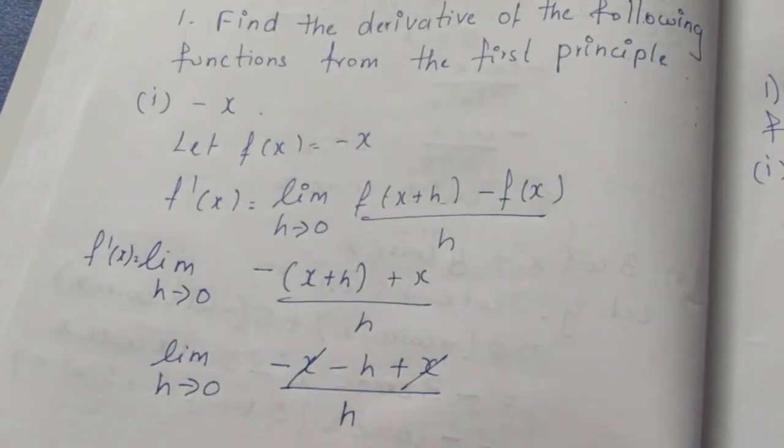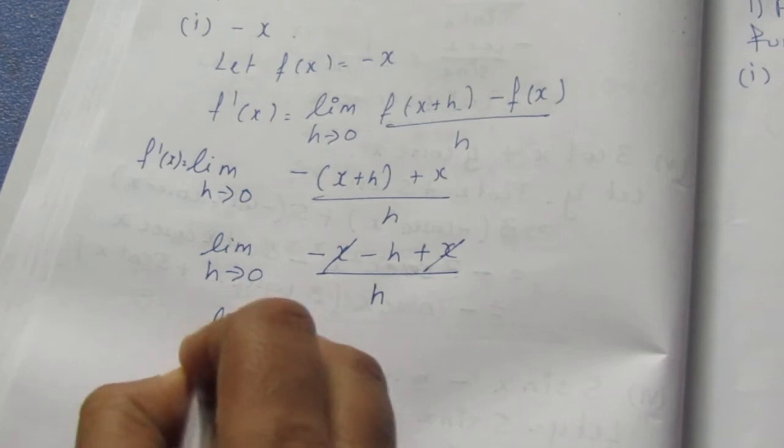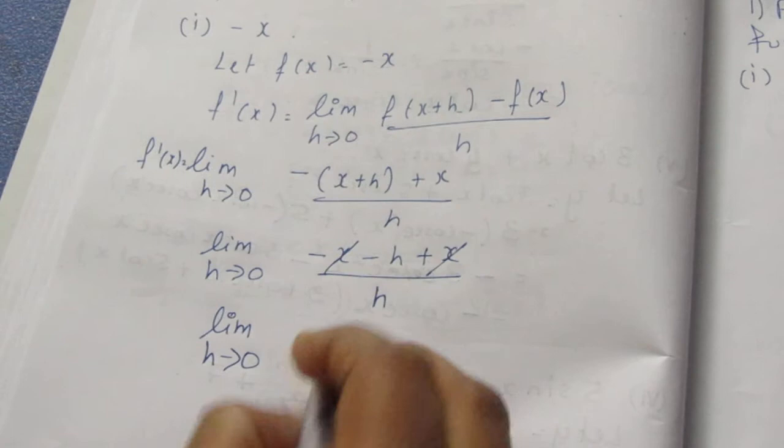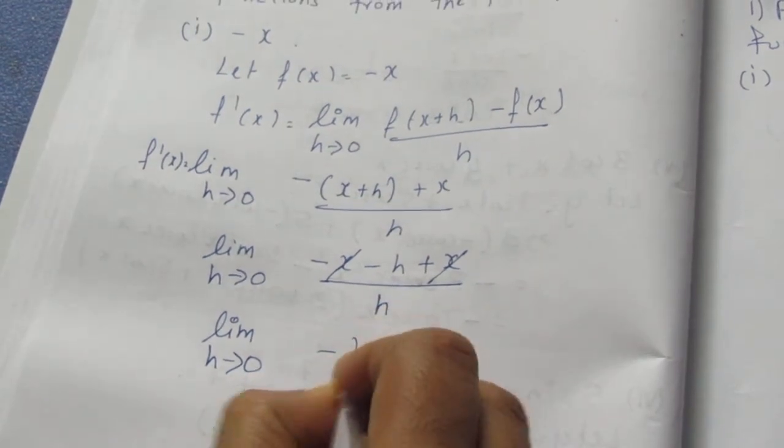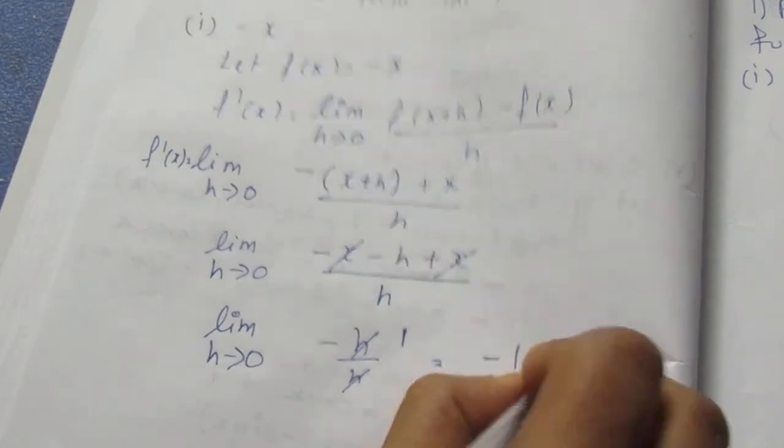Minus x and plus x cancel. We have lim(h→0) -h/h. The h cancels to give 1, so we get -1. The final answer is minus 1.